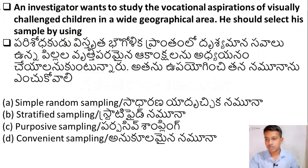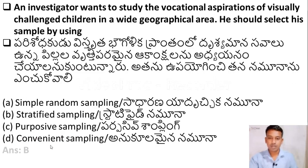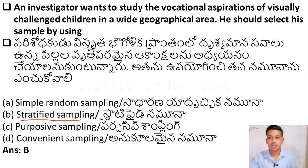The next question: an investigator wants to study the occupational aspirations of visually challenged children in a wide geographical area. He should select his sample by using — Option A: Simple random sampling, Option B: Stratified sampling, Option C: Purposive sampling, Option D: Convenient sampling. The correct answer is Option B — stratified sampling.